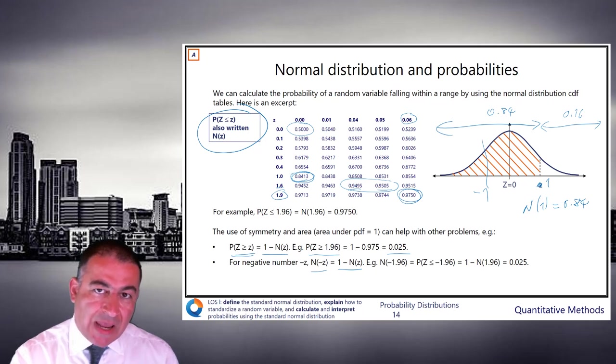So the chances of being below minus 1 is 16%. And on the formula, it's 1 minus n of 1. So 1 minus 0.84, which is 0.16. In other words, the area below minus 1 is the same as the area above plus 1.